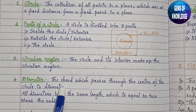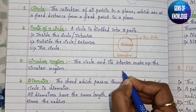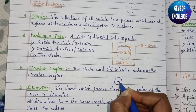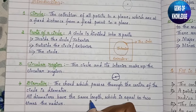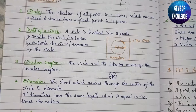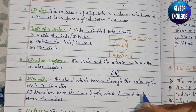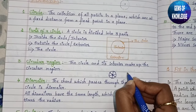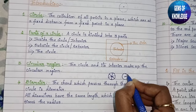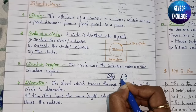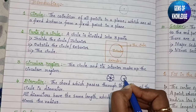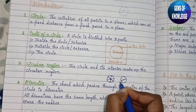Next comes the diameter. The chord which passes through the center of the circle is known as the diameter. The line passing through the center point is the diameter. All diameters have the same length, which is equal to two times the radius. The center point joined to any point on the circumference of the circle is known as the radius.